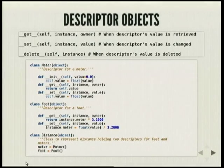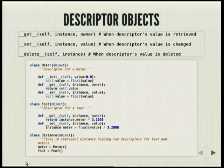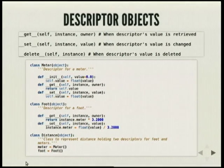You can also override magic methods for descriptor objects. Here we're using two descriptors for meter and foot, and we're using __get__ and __set__ methods to set and get the values.